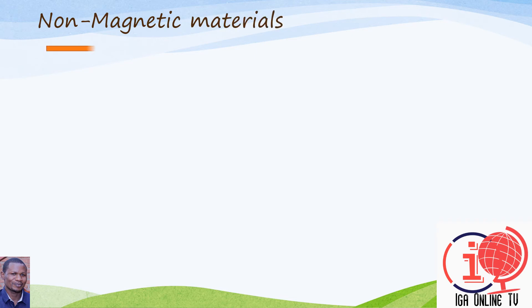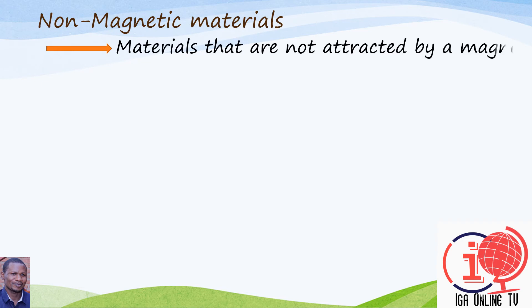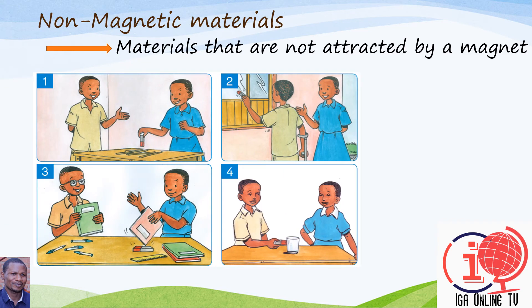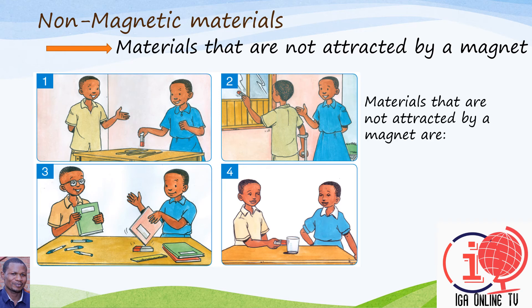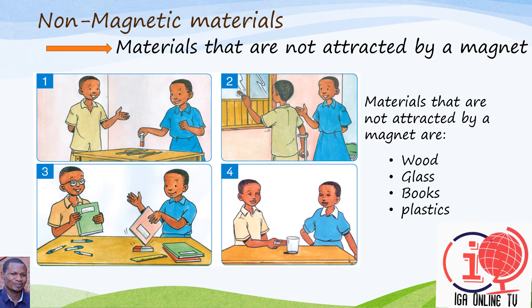Let's look at the materials which are not attracted by magnets. Look at the following pictures. Can you list the materials which are not attracted by magnets? The materials which are not attracted by magnets are wood, glass, books, plastic bottles, and so on. You can also list some other materials which are not attracted by a magnet.